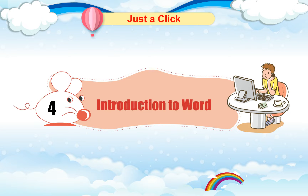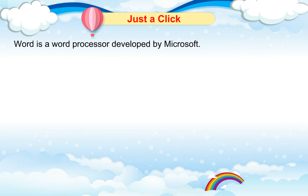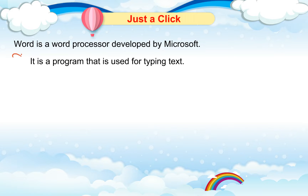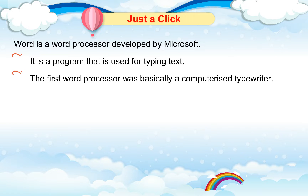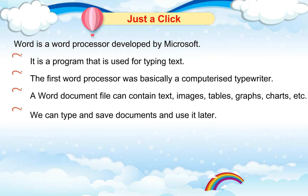Chapter 4: Introduction to Word. Hello children, today I am going to tell you how to write words and sentences in different formats using Word software. Word is a word processor developed by Microsoft. It is a program that is used for typing text. The first word processor was basically a computerized typewriter. A Word document file can contain text, images, tables, graphs, charts, etc. We can type and save documents and use them later.